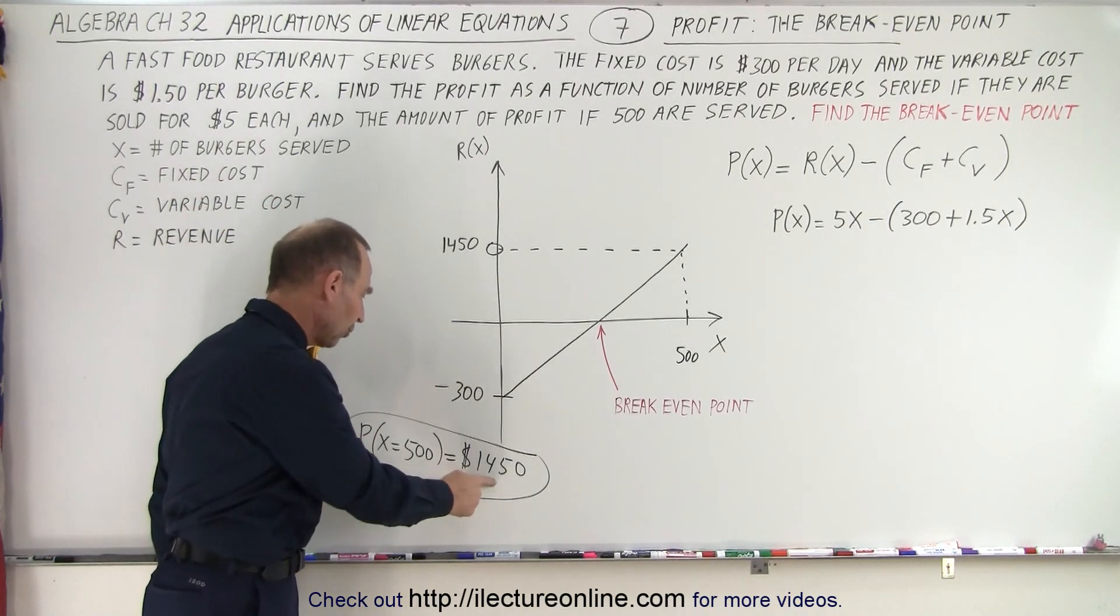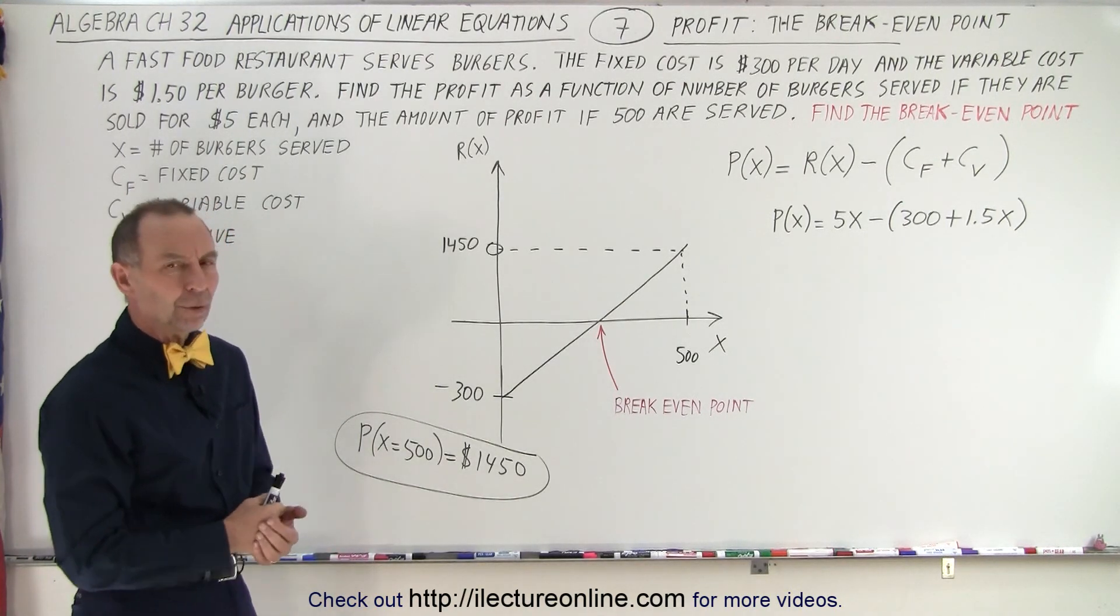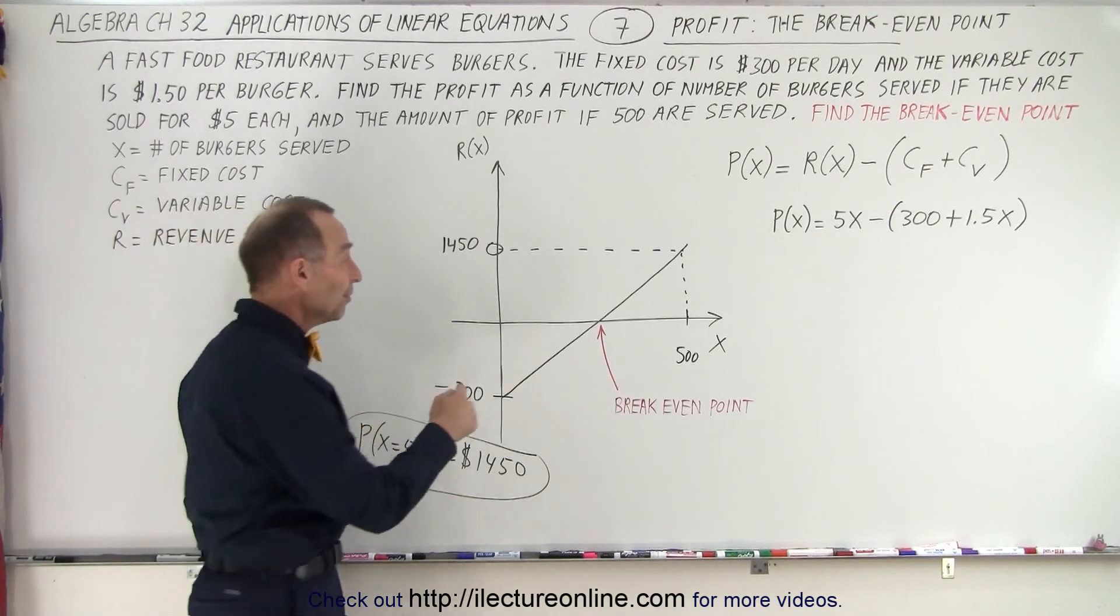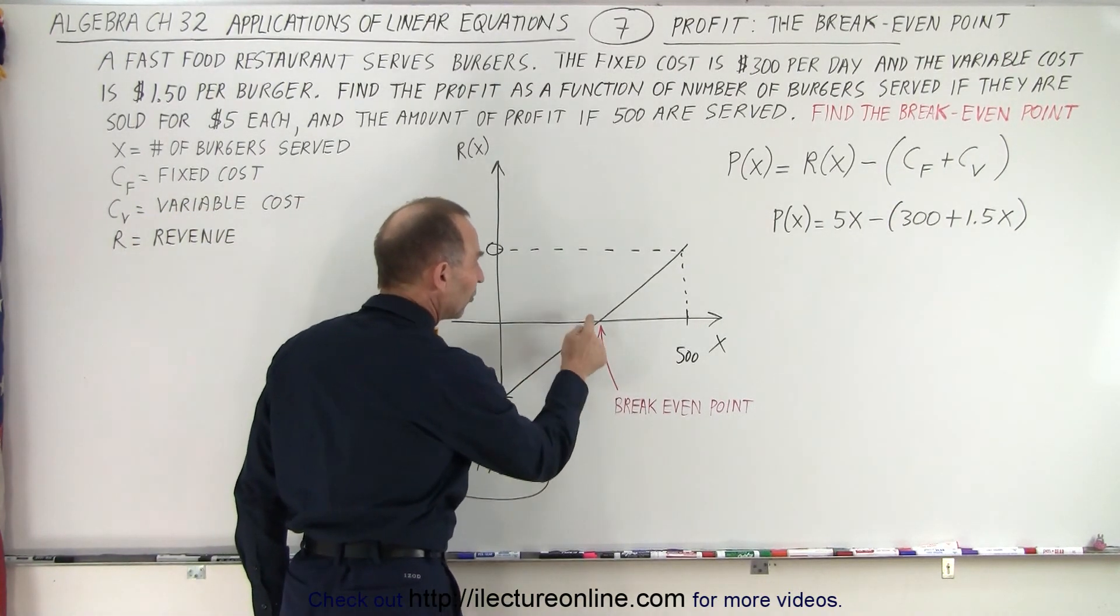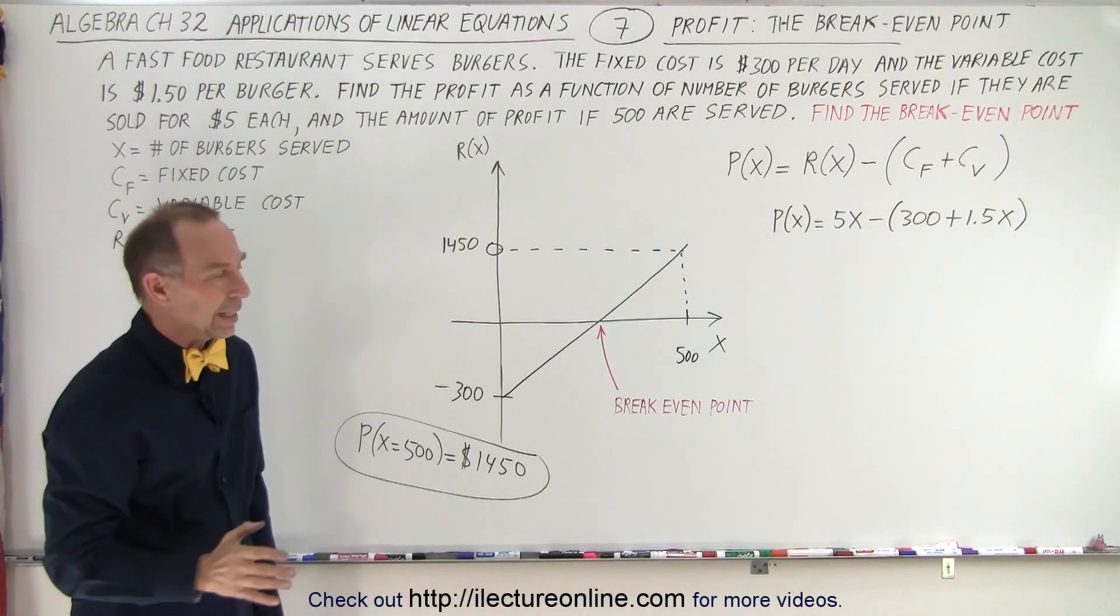If we sell 500 burgers we make a handsome profit each day. But what if we don't? Well, we want to know what the break-even point is. In other words, the break-even point is where I sell just enough burgers not to make any money but also not to lose any money.